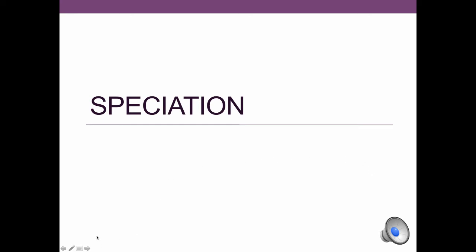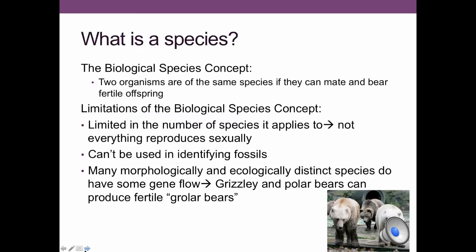Today we're going to look at speciation, and to understand speciation we need to know what a species is. The biological species concept states that two organisms are of the same species if they can mate and bear fertile offspring. There are limitations to that because it doesn't apply to things that reproduce asexually, since they don't need to mate at all.